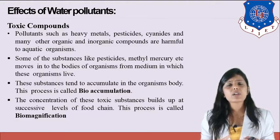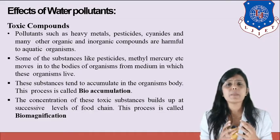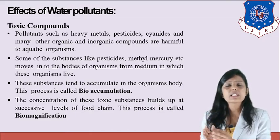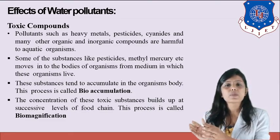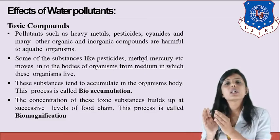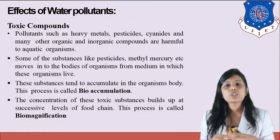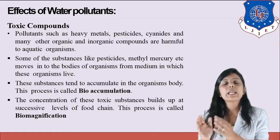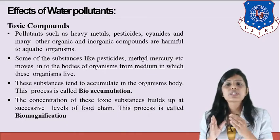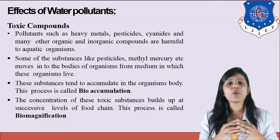Whenever a toxic compound enters a living organism and is passed from one organism to another, the concentration of the toxic compound increases, because in the food chain small organisms are eaten by larger organisms. The concentration of toxicity increases from small organism to large organism. This is known as biomagnification — where the concentration of toxic substances builds up at successive levels of the food chain.